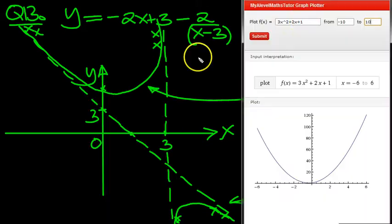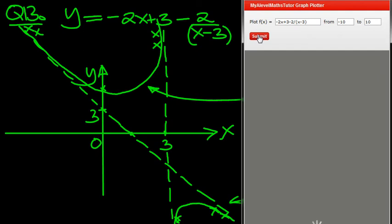So let's check that on our plotter. We'll do from minus 10 to 10, minus 2x plus 3, minus 2 divided by brackets. I'm just writing it in this small dialog box. Then we'll click submit to see the sketch.